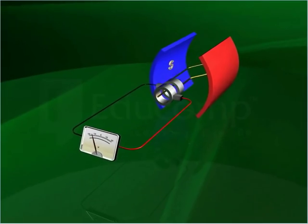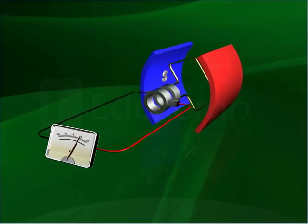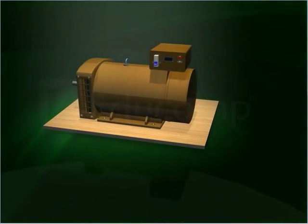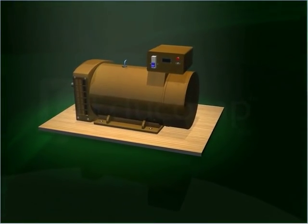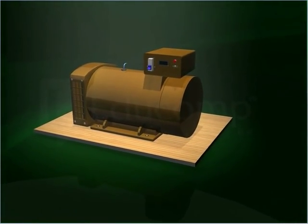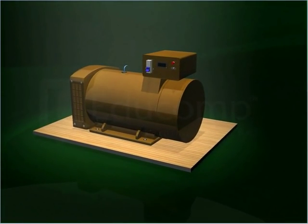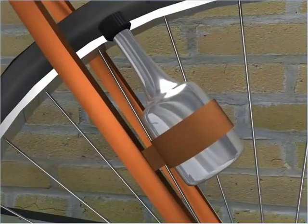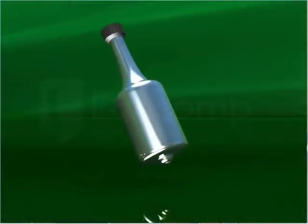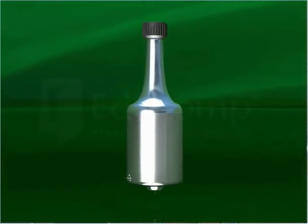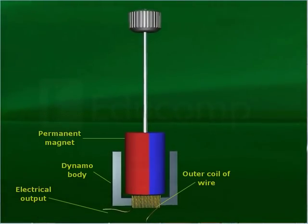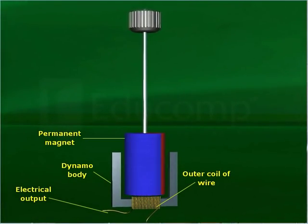Lastly, unlike a simple AC generator, a fixed coil generator has a more compact and space-saving design. This explains why a bicycle dynamo, which is a miniature AC power generator, employs a fixed coil design.